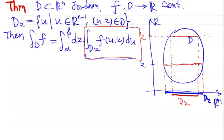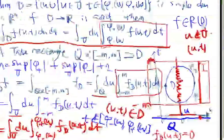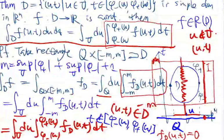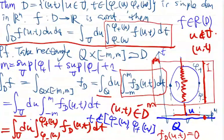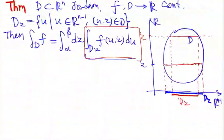This theorem is quite useful. It is different from the previous theorem we just proved — in the previous theorem the inner integral is a one-dimensional integral taken first, then (n-1)-dimensional. But now in this theorem we take the (n-1)-dimensional integral over Dz first, then take the single integral.